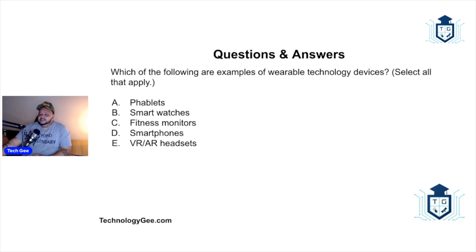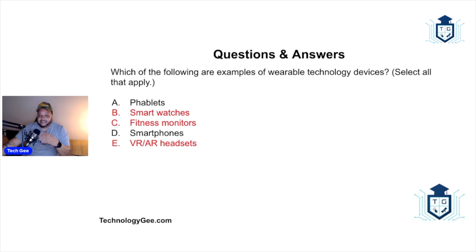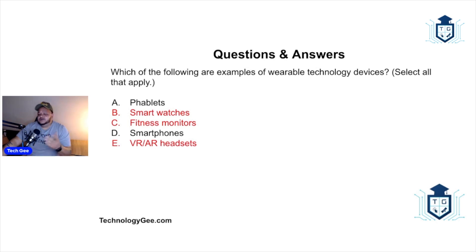Question two: Which of the following are examples of wearable technology devices — a phablet, smartwatch, fitness monitor, smartphone, or VR/AR headset? Select all that apply. The correct answers include a smartwatch — I've got one on my wrist right now, an Amazfit. I only have to charge it maybe once every two weeks and it tracks steps, GPS, and fitness data.